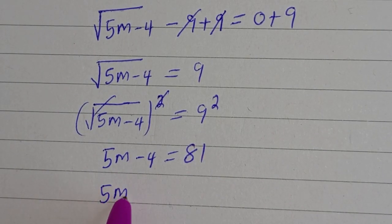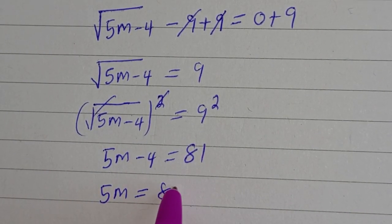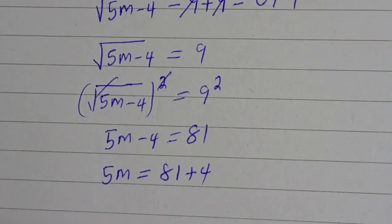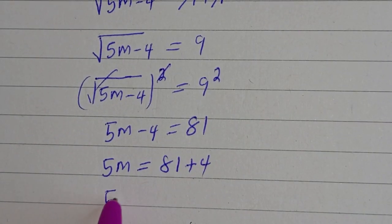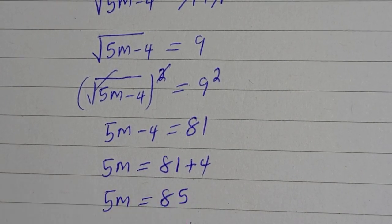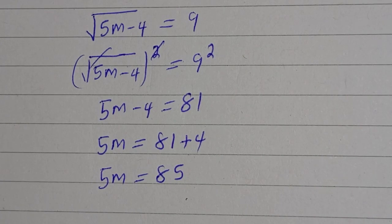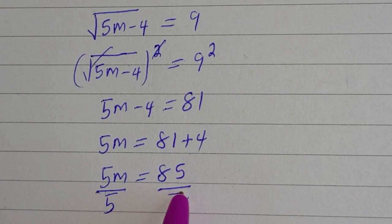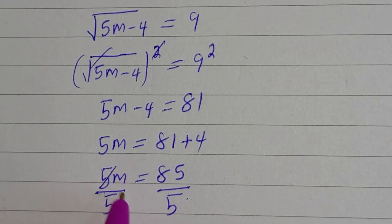Then 5m is equal to 81 plus 4. Now let's divide both sides by 5, divided by 5, divided by 5. This will cancel this.